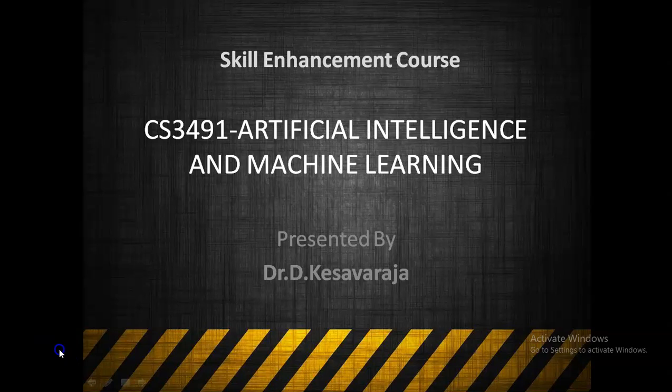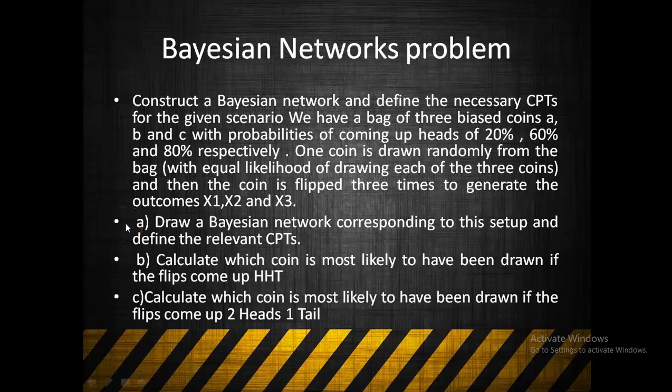Welcome to this Phil Enhancement Course, CF3491 Archive Intelligence and Machine Learning. Today we will see about a simple Bayesian network problem. The problem is to construct a simple Bayesian network and define the necessary conditional probability table for a given scenario. We have a bag comprising three biased coins named A, B, and C.